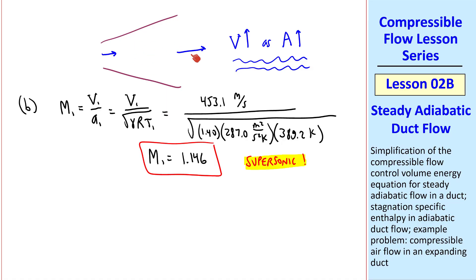This agrees with this discussion we just had here. Whenever V goes up with area, we can be assured that this is supersonic flow. Subsonic flow would do the opposite. Similarly, M2 is V2 over A2. And when you plug in the numbers,